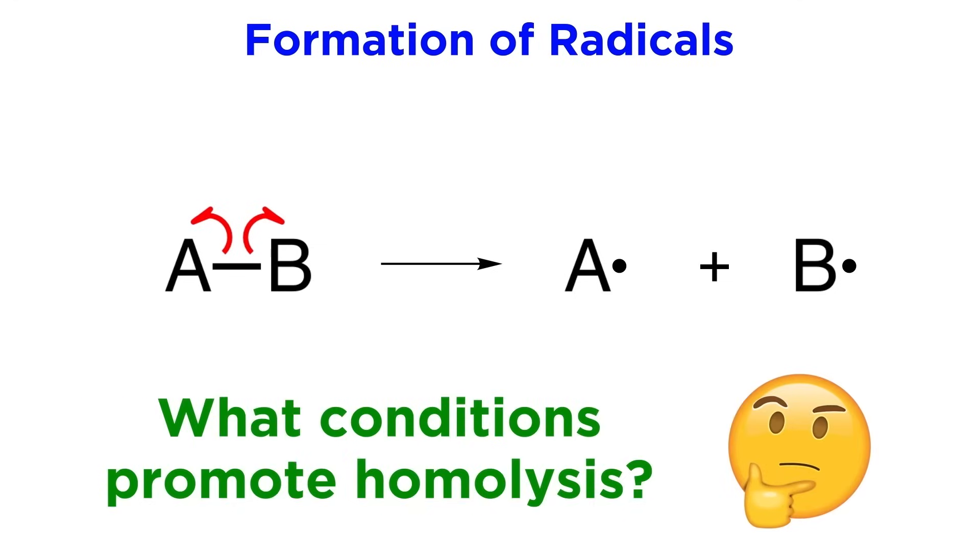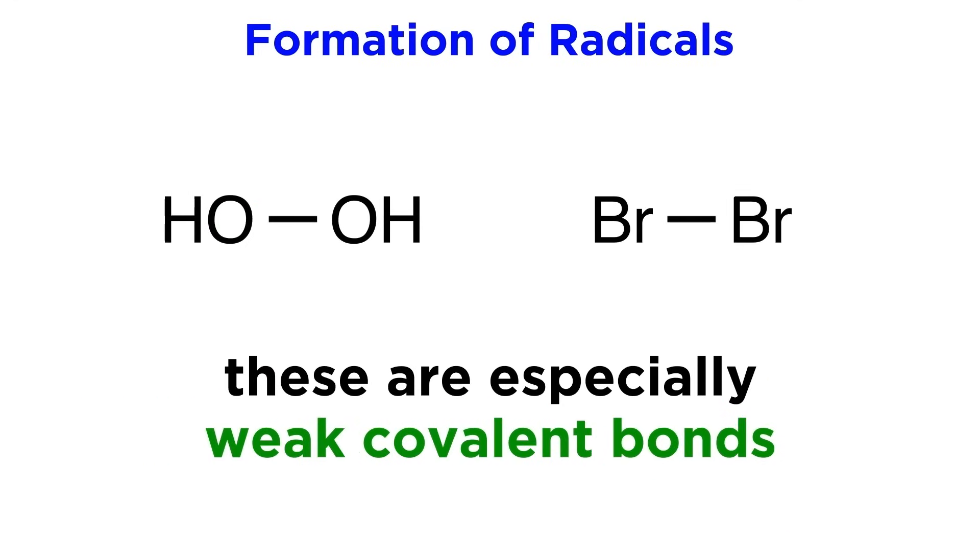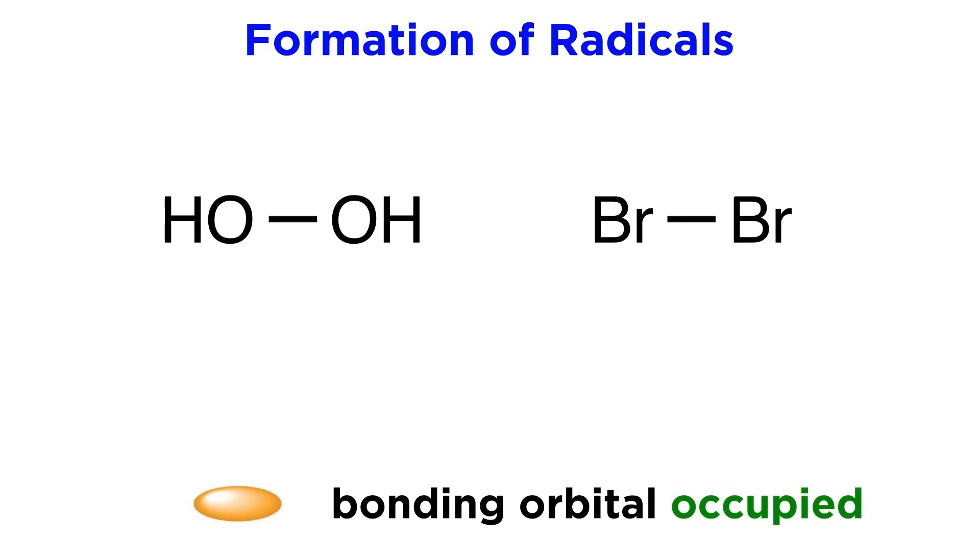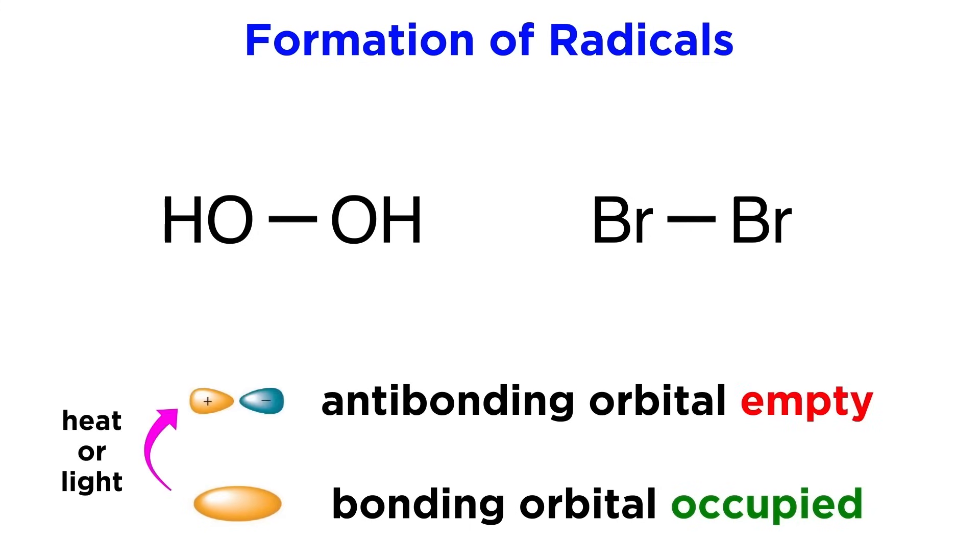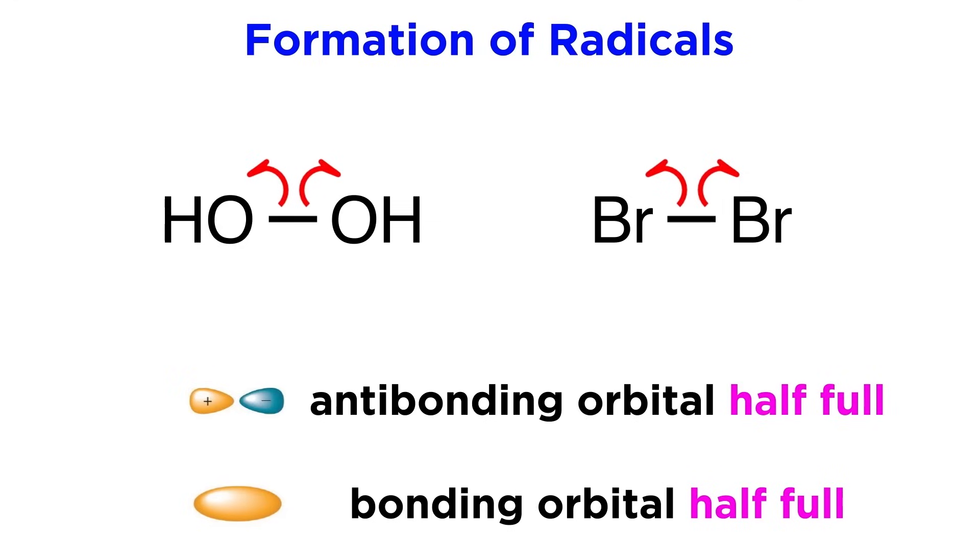What kinds of conditions will promote homolysis? Well if we have a relatively weak covalent bond, like an oxygen-oxygen bond, or a halogen-halogen bond, and we consider the electrons as sitting in a sigma bonding orbital with the empty antibonding orbital above, sufficient heating or collision with a photon of UV light will promote one of the bonding electrons up to the antibonding orbital. If this occurs, the bond order becomes zero and the bond will break.